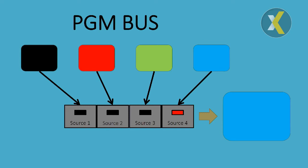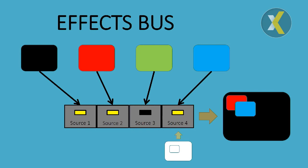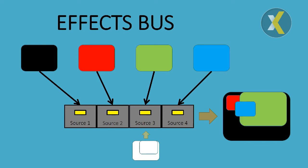If we compare this to an effects bus instead, we start with the same situation — one source active and that is the output. Now for each source we can do some settings, for example for positioning and scaling, so that when we turn source 2 on, that position and scale is applied and the red is added on top of the already active black source 1. Same thing for source 4 — we apply the settings and it's added on top of the previous ones. Same thing for the green source 3; when it's active, it's combined with the other three active sources.